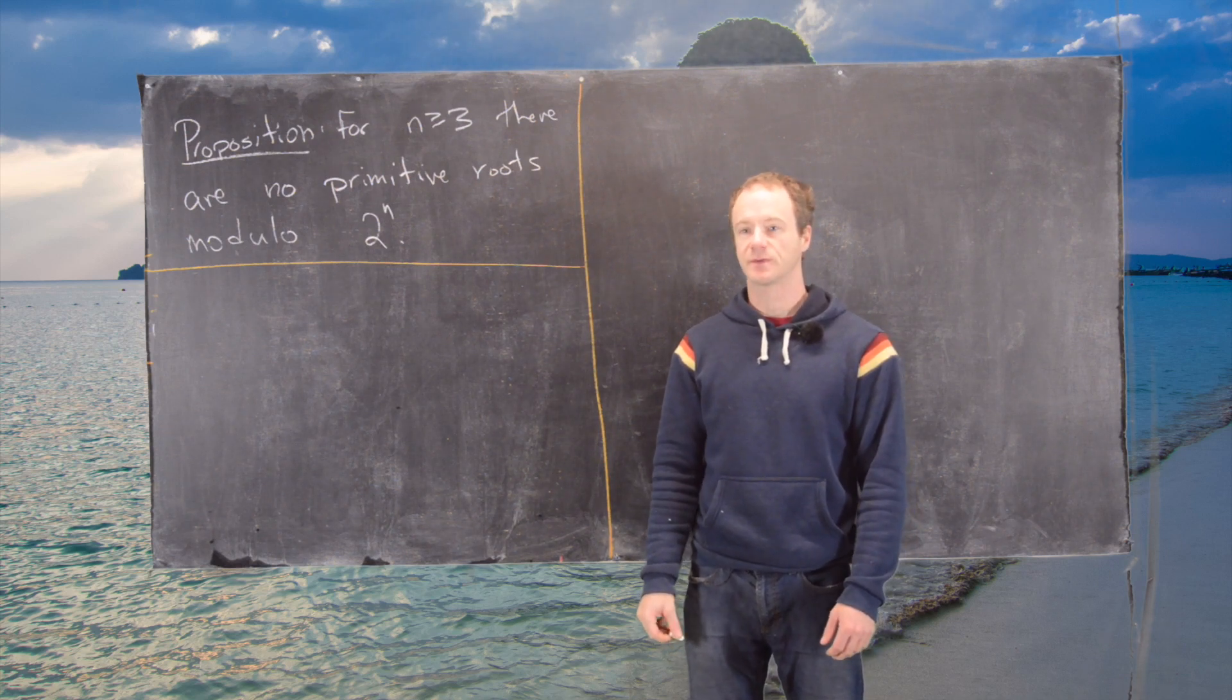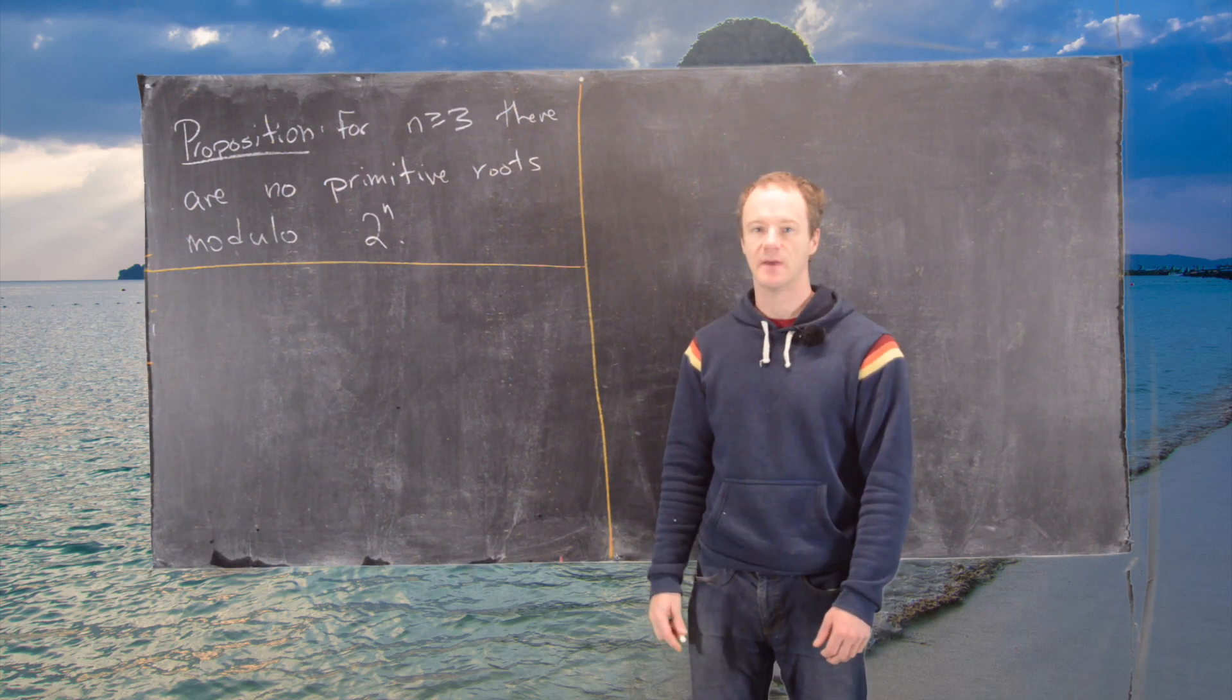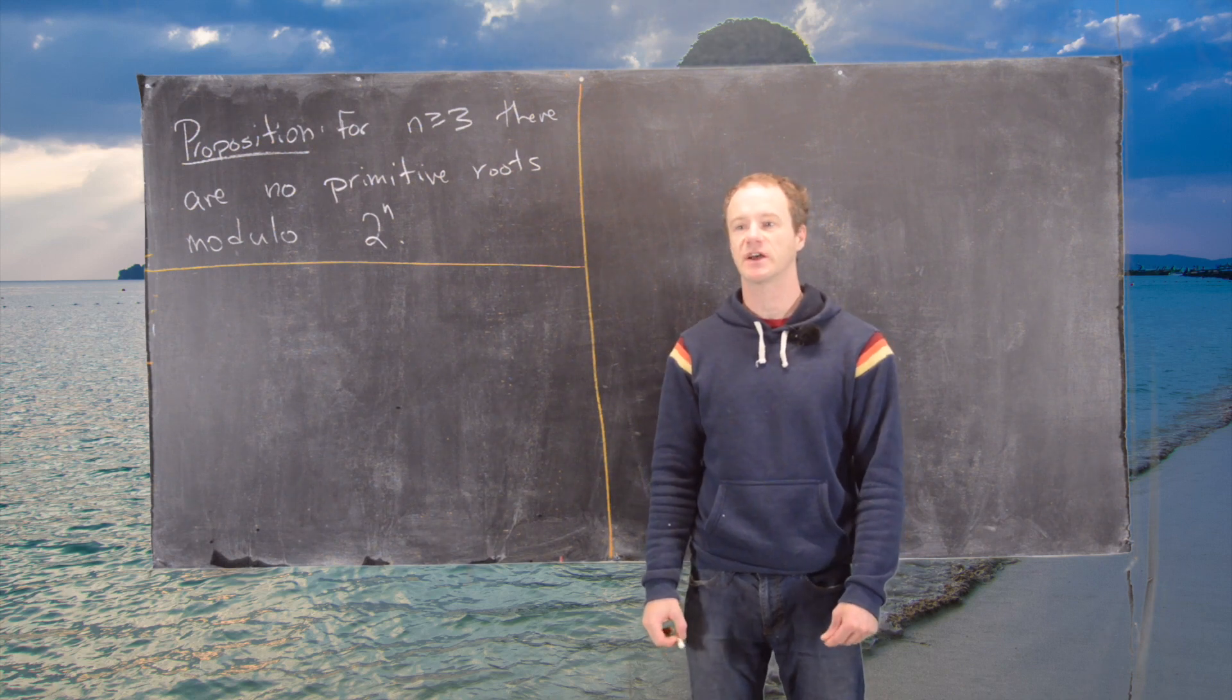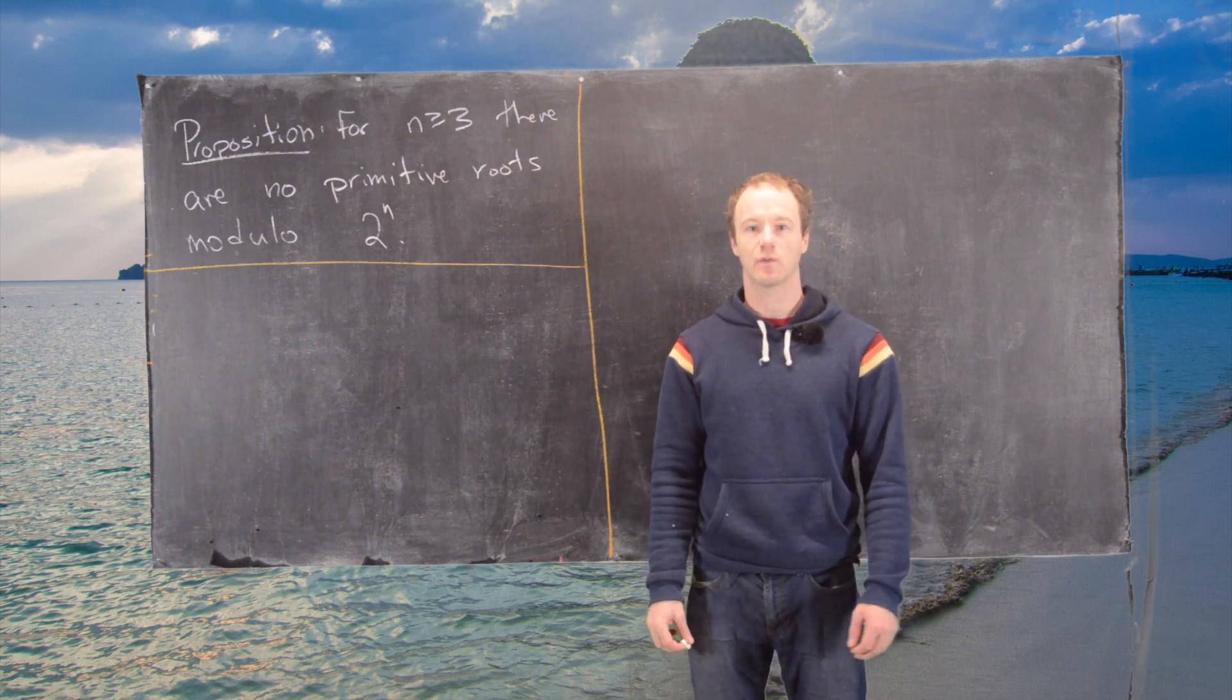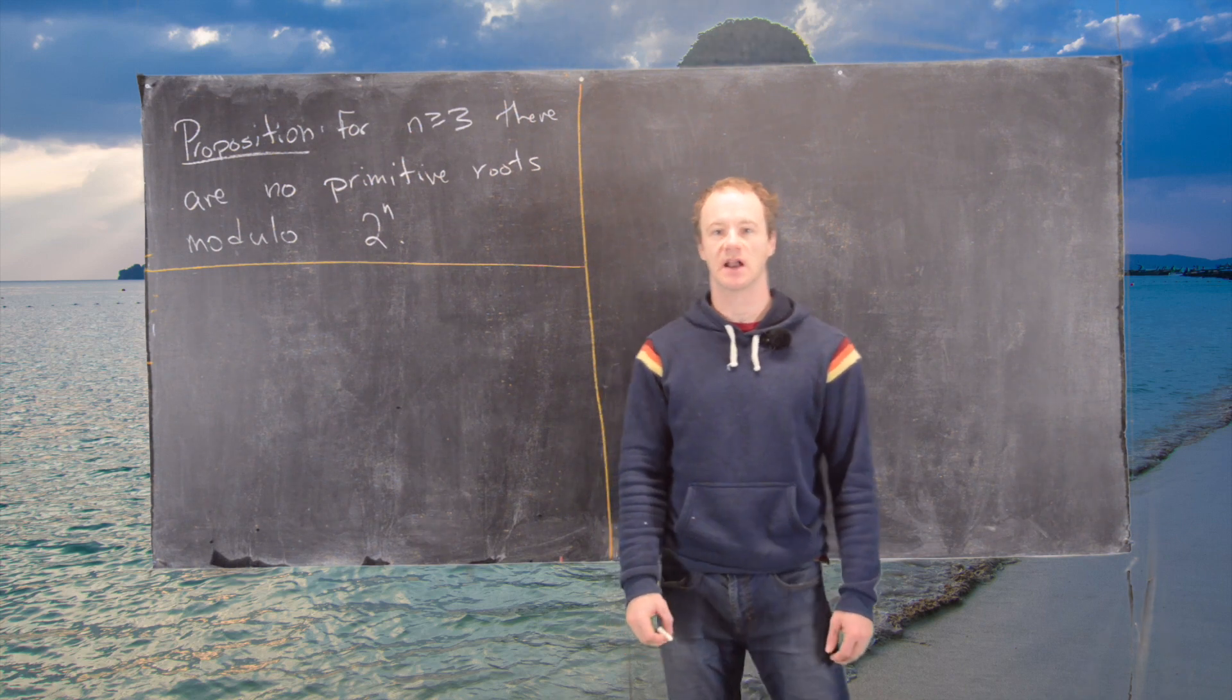Previously we've proven that there is a primitive root modulo a prime, and now we're working towards answering the question: given a natural number, when do we know if there is or is not a primitive root?